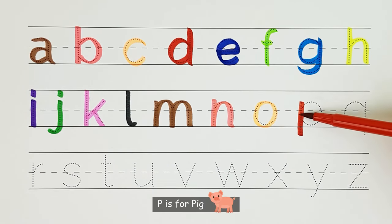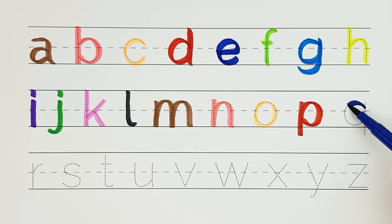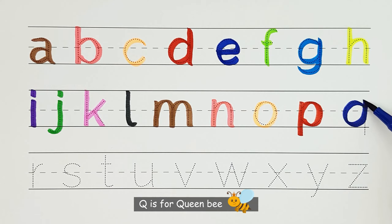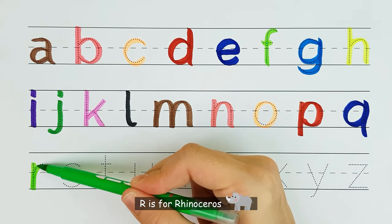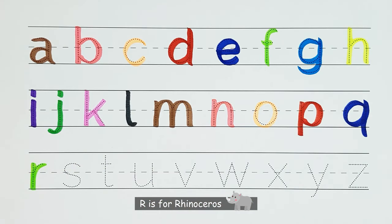P. P is for pig. P. Q. Q is for queen bee. Q. R. R is for rhinoceros. R.